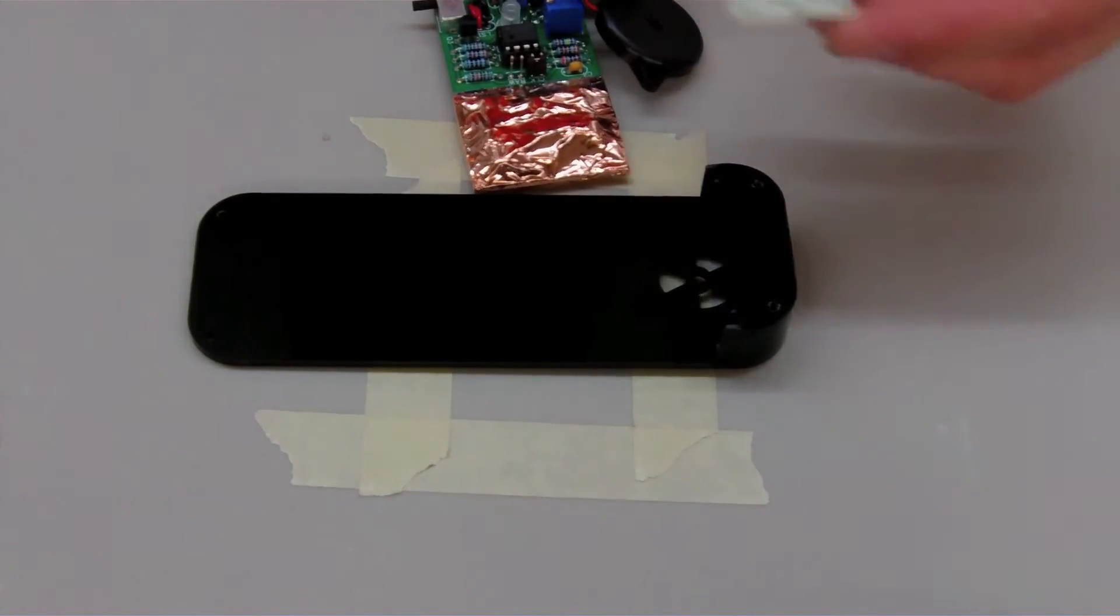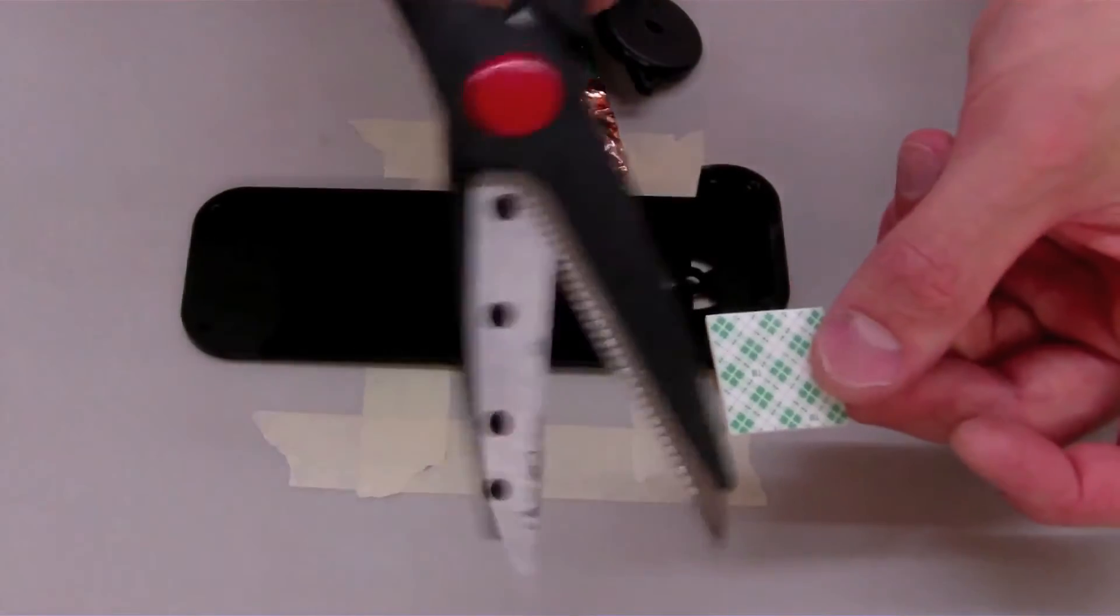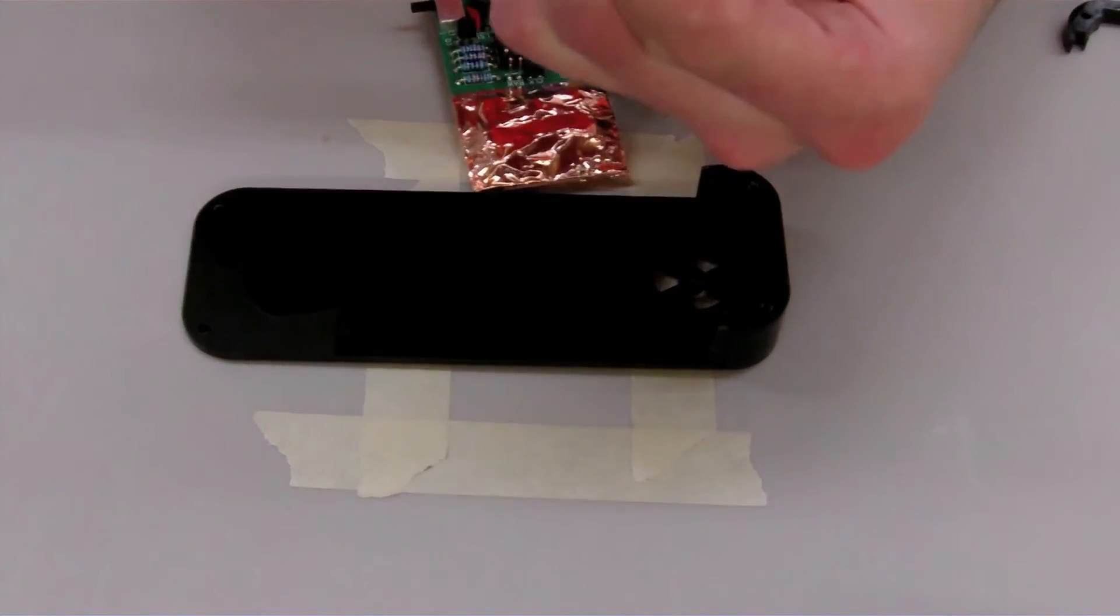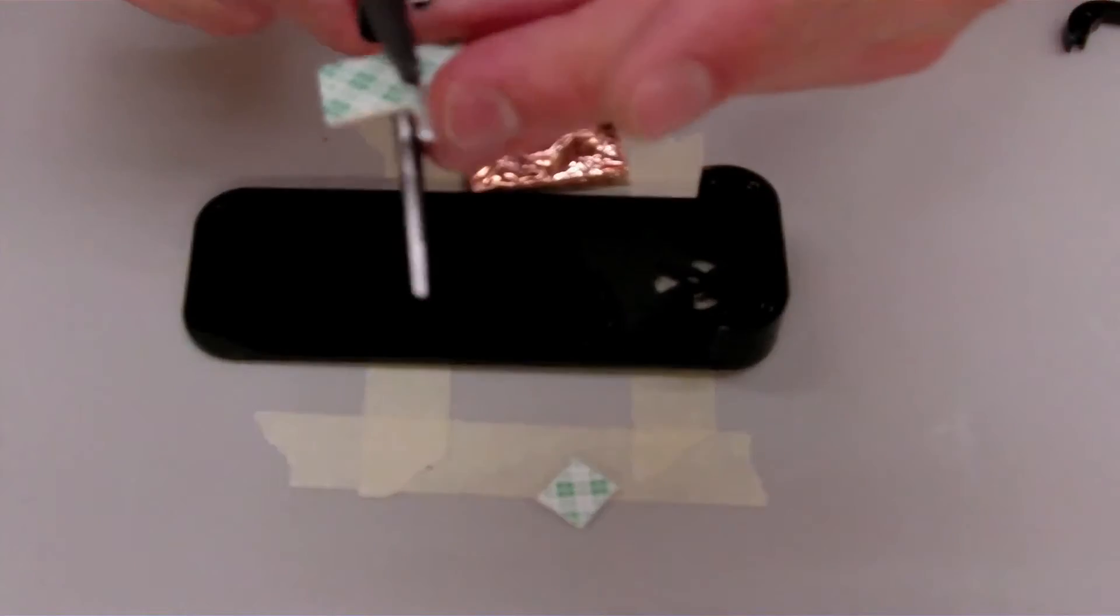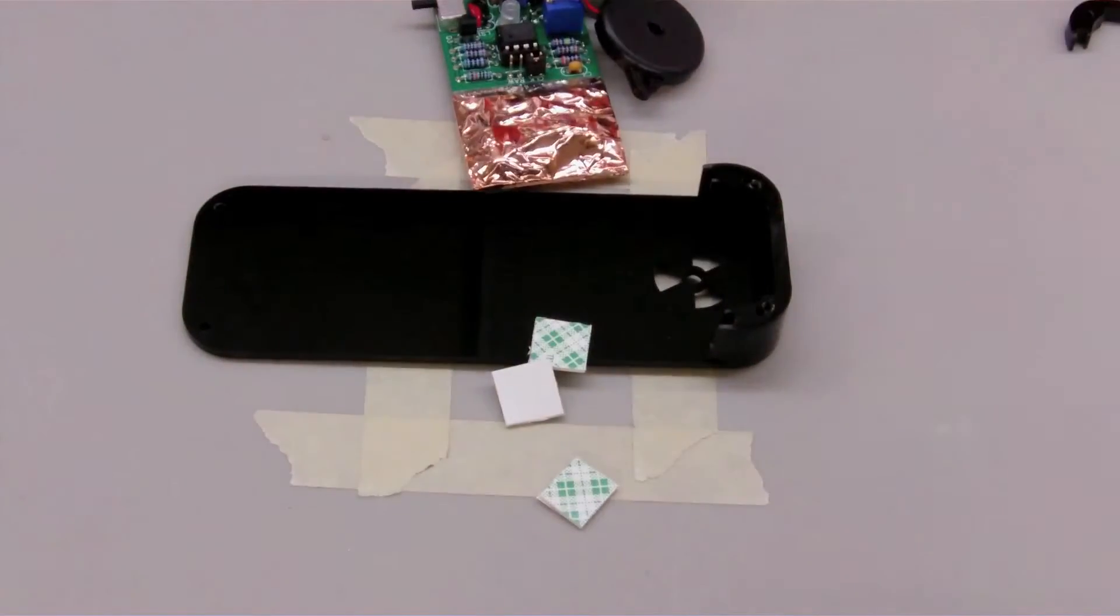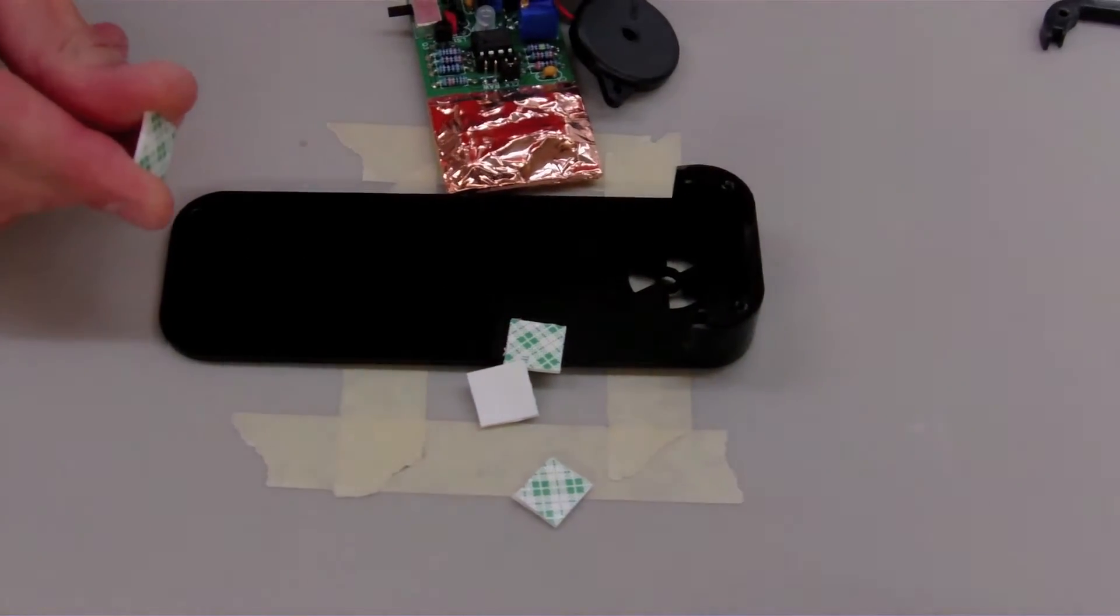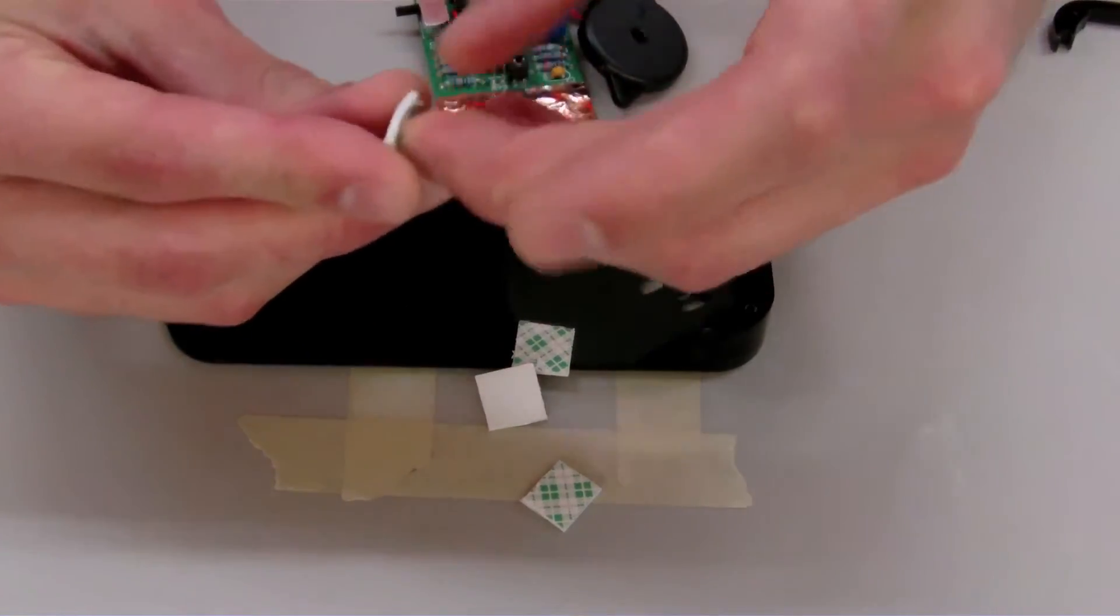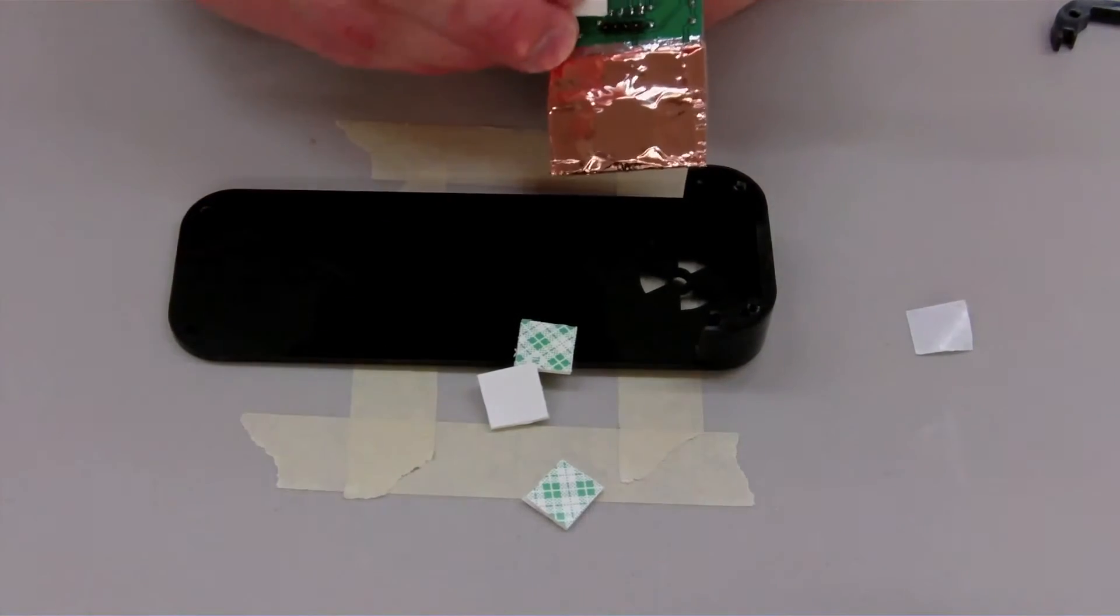Alright. So then we move on to the adhesion of the detector. Your kit came with a little foam square. And then using a pair of scissors, cut that foam square into fourths.